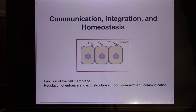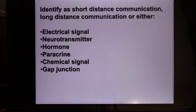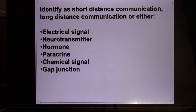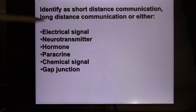Our new topic is cell communication and homeostasis. Cells use all kinds of communication — different ways for communication. We're going to talk about all of them in this class. The first two are electrical signals and neurotransmitters, both of which are used in neurons.